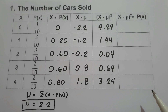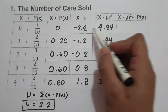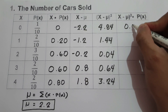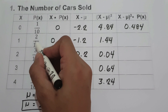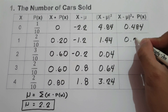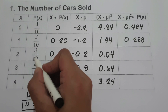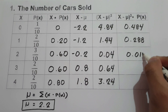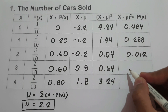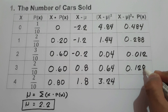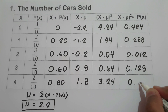To complete the last column, we multiply (x minus mean) squared by P(x). That gives: 4.84 times 1/10 = 0.484; 1.44 times 2/10 = 0.288; 0.04 times 3/10 = 0.012; 0.64 times 2/10 = 0.128; and 3.24 times 2/10 = 0.648.